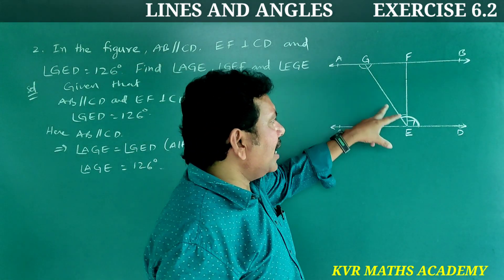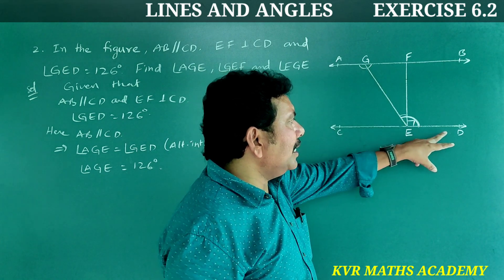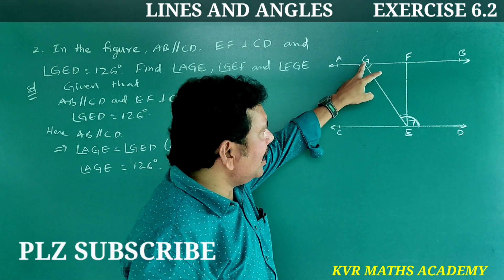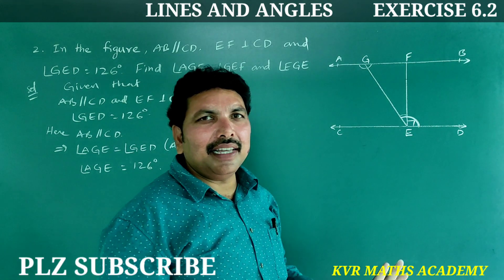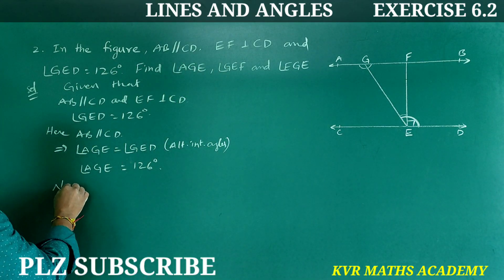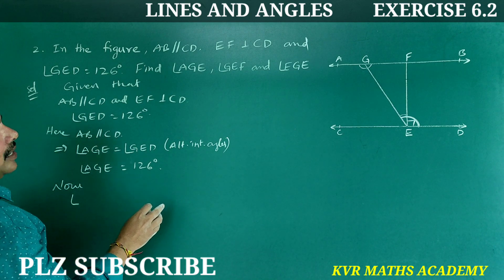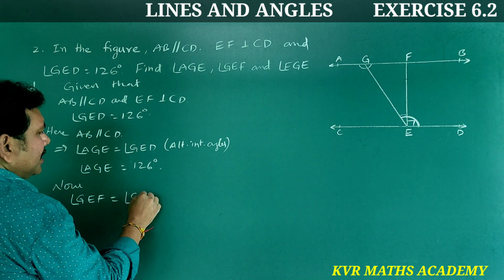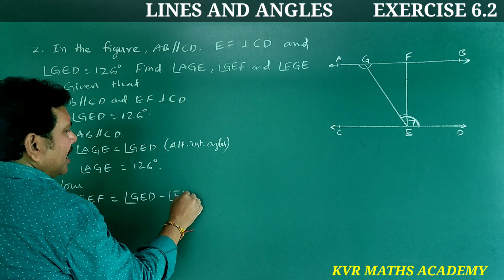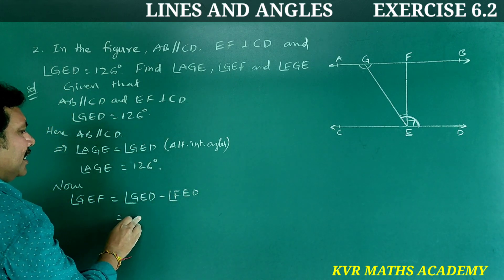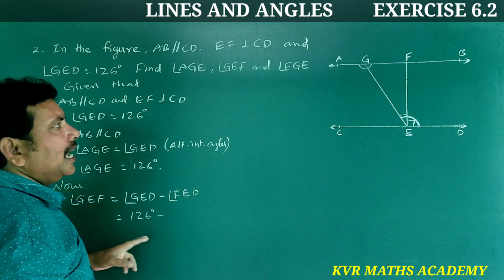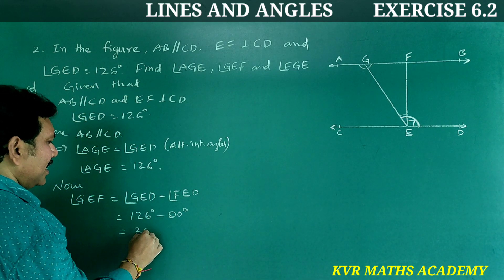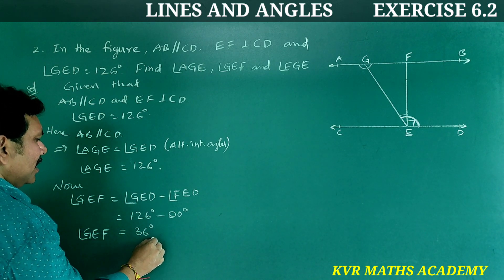Next, angle GEF: since EF is perpendicular to CD, angle FED equals 90 degrees. Therefore angle GEF equals angle GED minus angle FED, which is 126 minus 90 equals 36 degrees.